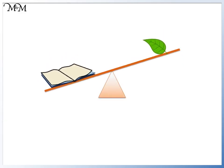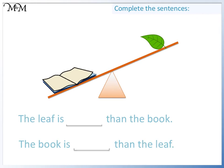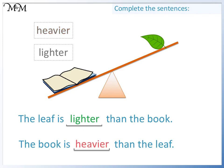Here is an example for you to try. Complete the sentences below using the words heavier and lighter. Pause the video and have a go. The leaf is lifted higher than the book because it is not pushing down as much as the book is. The leaf is lighter than the book. The book is pushing down more than the leaf. The book is heavier than the leaf.